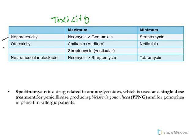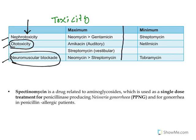Coming to toxicity, aminoglycosides show three major types: nephrotoxicity (kidney damage), ototoxicity (hearing impairment), and neuromuscular blockade (skeletal muscle blockade, movement impairment). All the drugs will show these side effects to varying degrees.